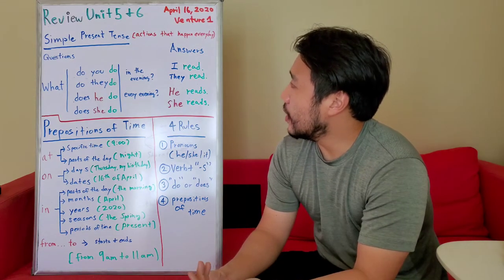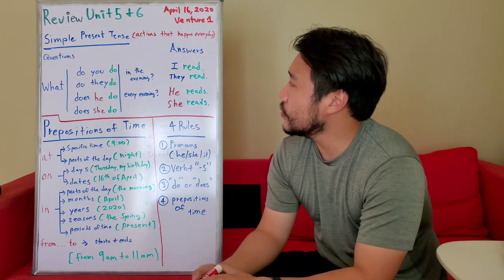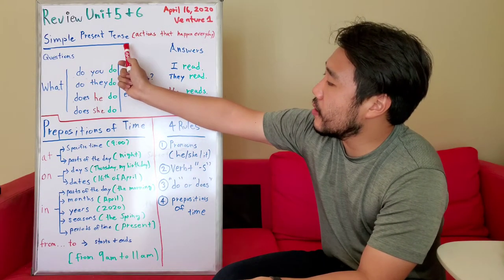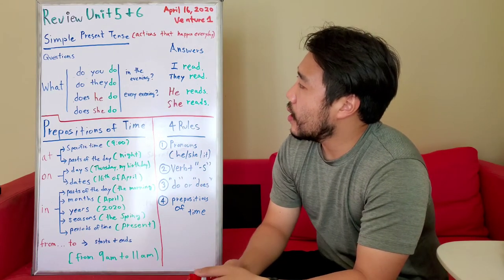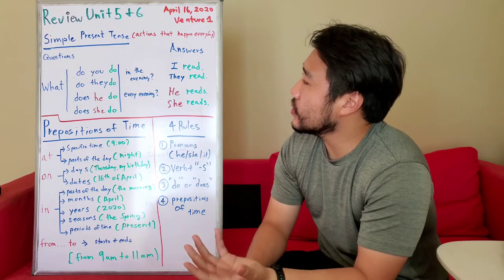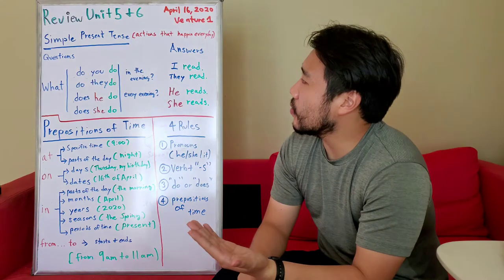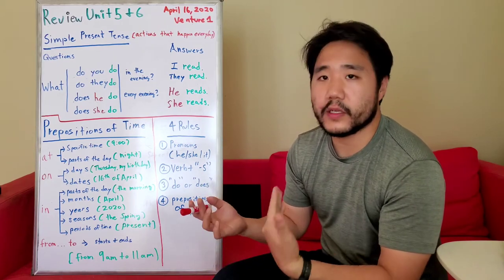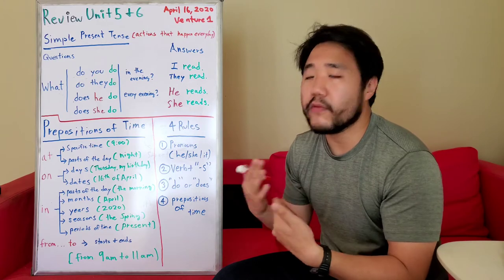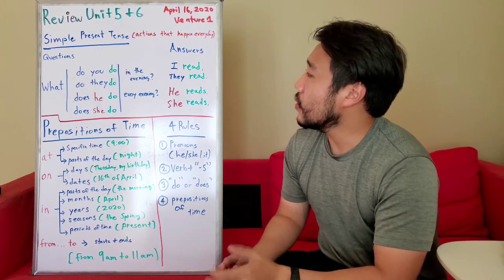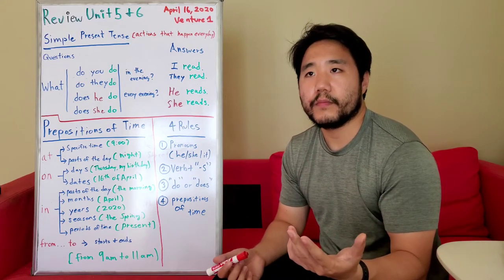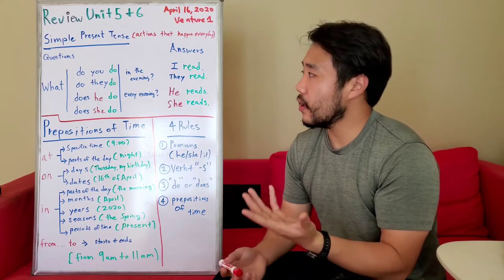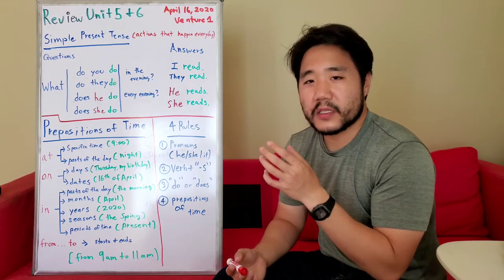In order to discuss daily activities with time, we have to learn about simple present tense and prepositions of time. We use simple present tense to describe actions that happen every day, which goes along very well with daily activities — because daily activities are activities that happen every day or most of the time. When discussing daily activities, we need to know how to ask and answer questions.